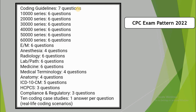If you are attending the online CPC exam, it remains a two-part exam. Two hours will be given to answer 50 questions in each session — there will be two sessions, each having 50 questions. You need to achieve a passing mark of 70 percent.